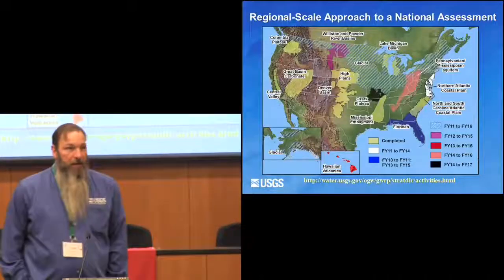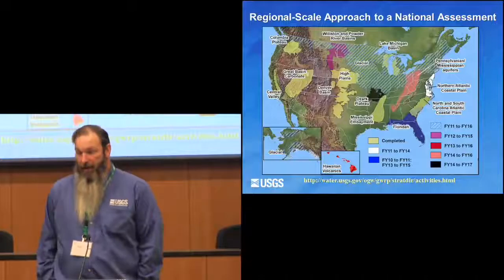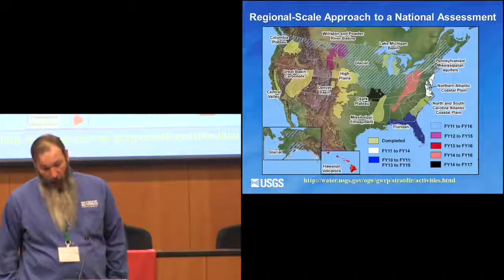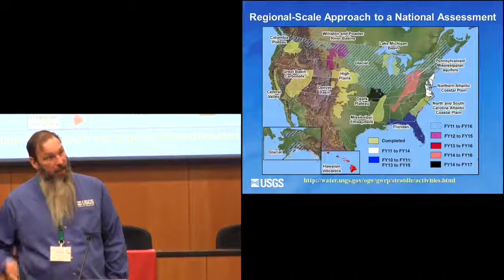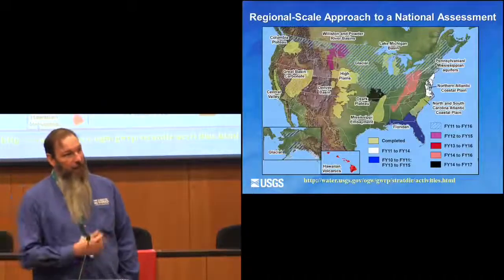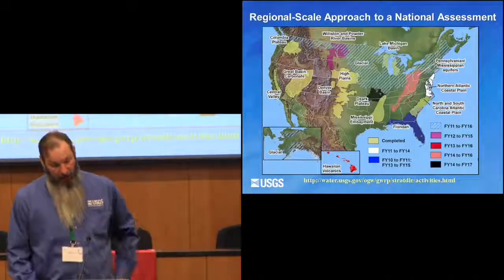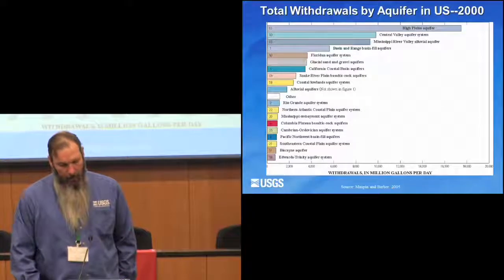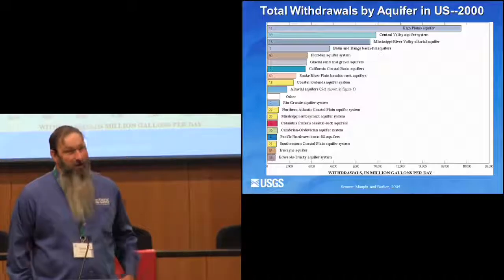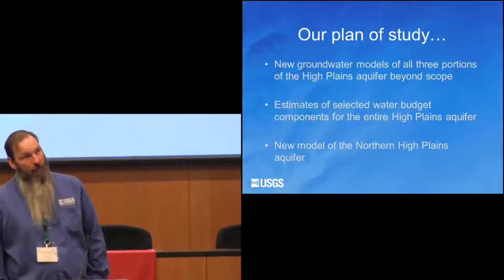We do regional studies of principal aquifers across the United States. You can see in gold many of the studies already completed or nearly completed — many of the principal aquifers from California all the way to the east coast glacial aquifers. These studies are rolled up every five years and reported to Congress on our nation's water availability, but also provide a foundation for local stakeholders. The High Plains aquifer accounts for about 30% of groundwater withdrawal for irrigation in the United States.